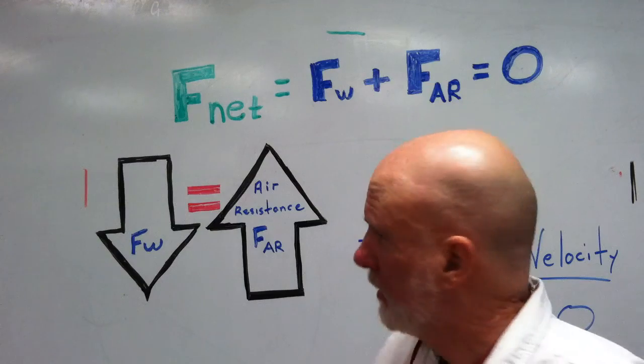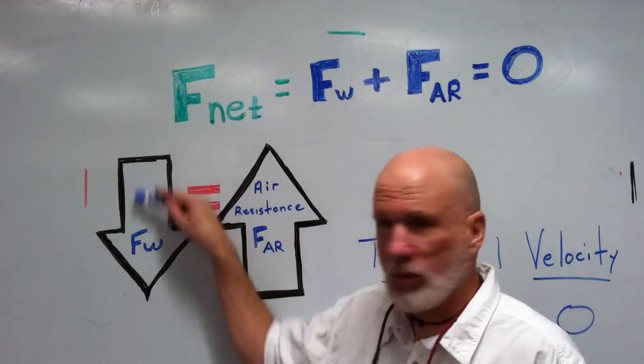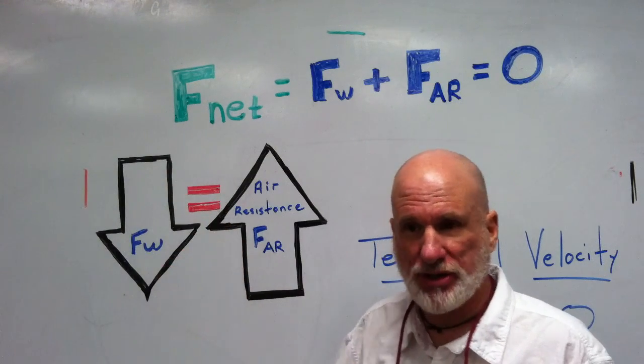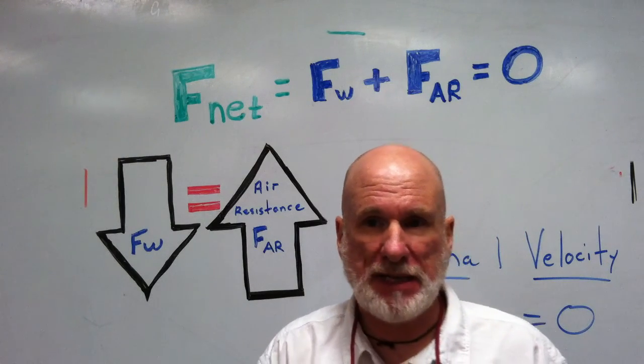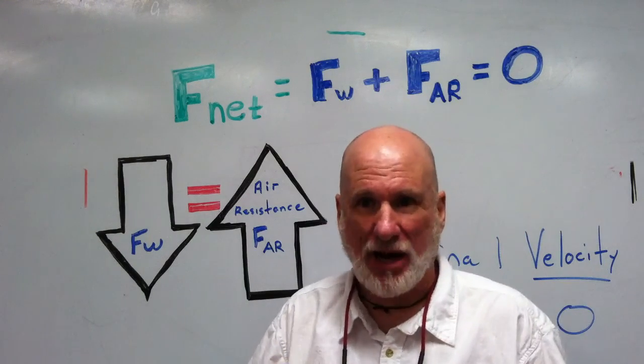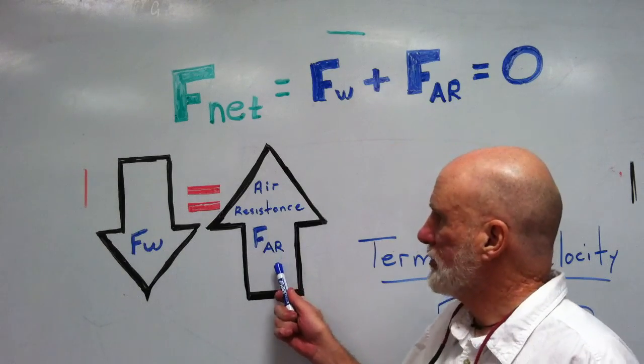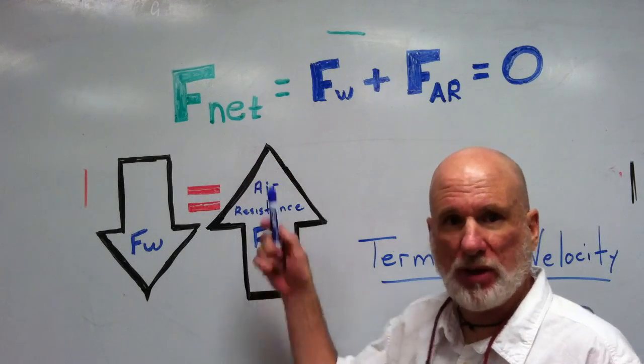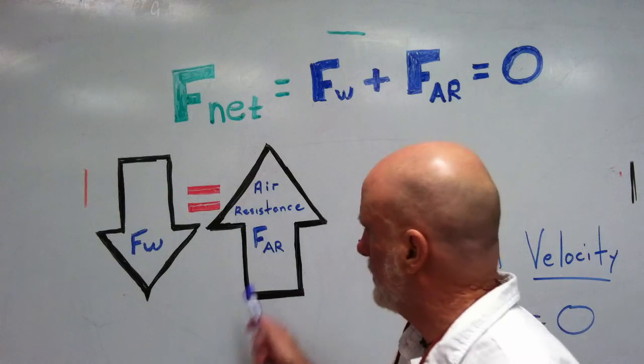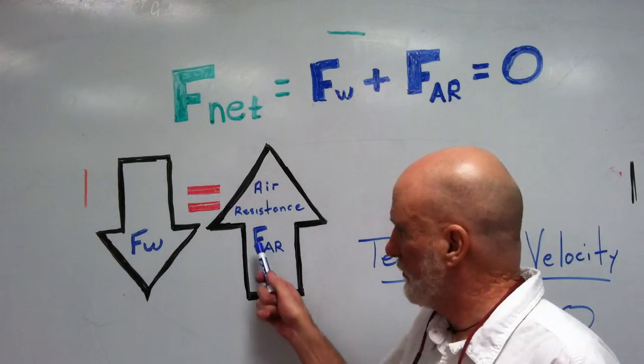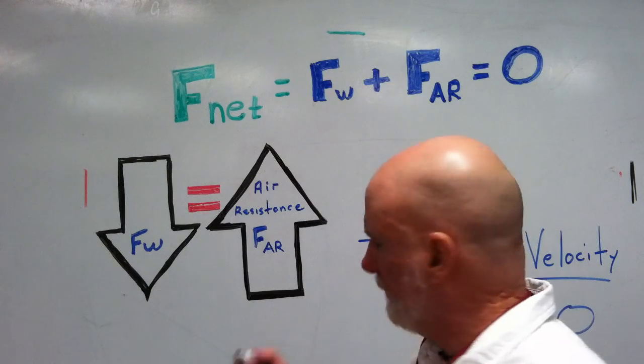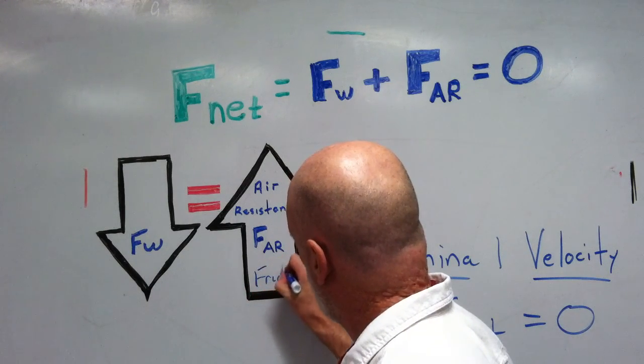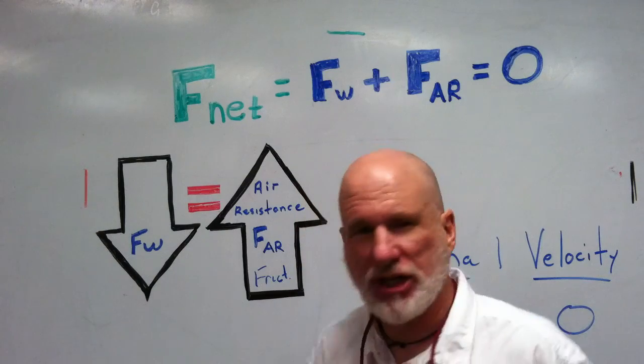So when my downward weight, that force is moving fast enough so it meets enough air. So the upward airflow we call air resistance, the force of air resistance. It's a type of friction.